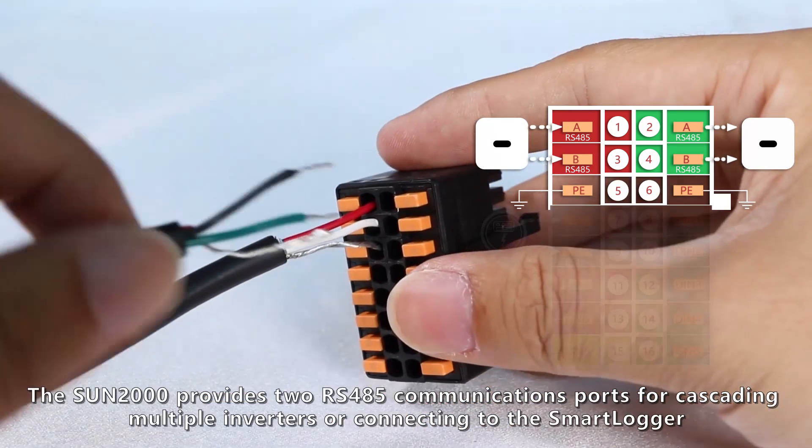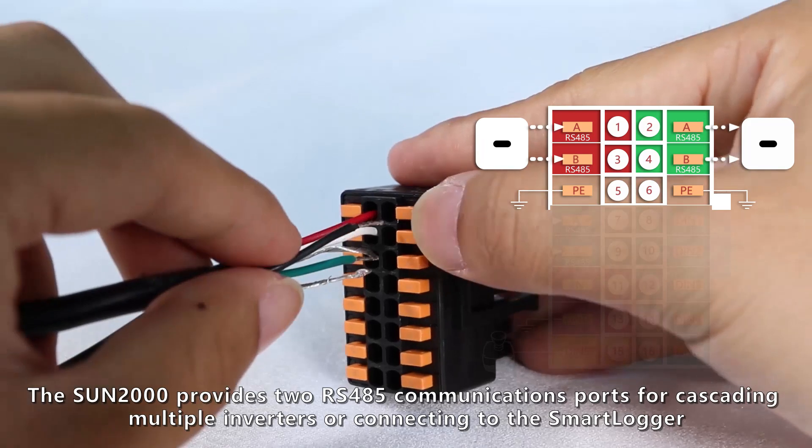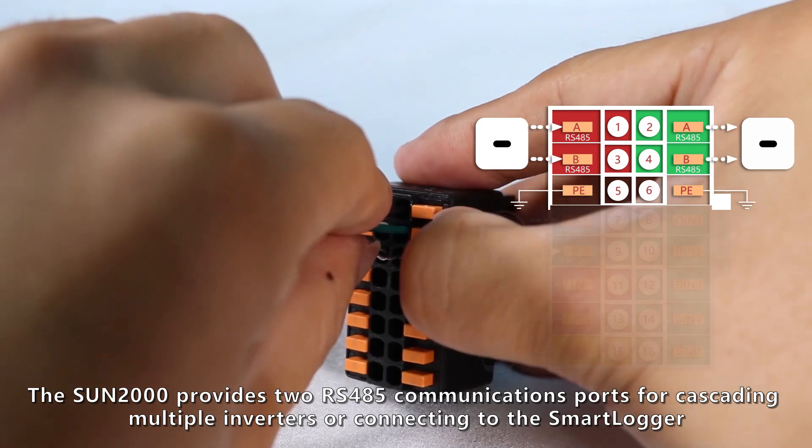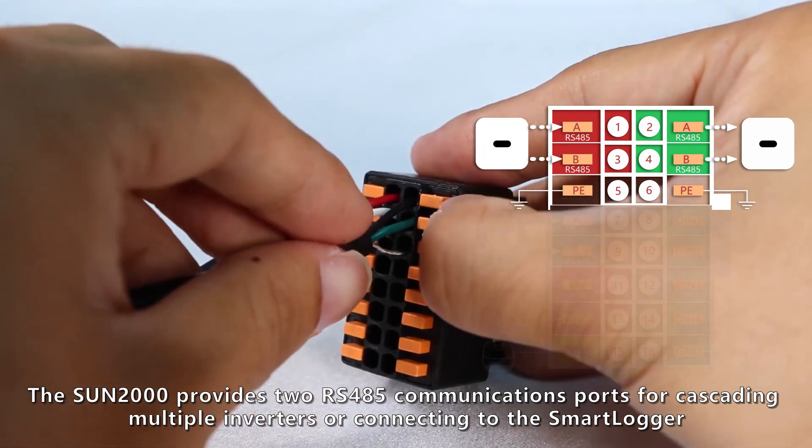The Sun 2000 provides two RS485 communications ports for cascading multiple inverters.